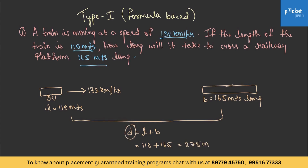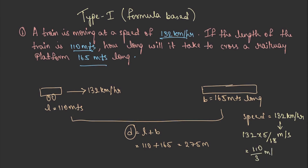Now we have the distance. The speed is 132 km per hour, so we convert it to meters per second: 132 × 5/18, which gives 110/3 meters per second.